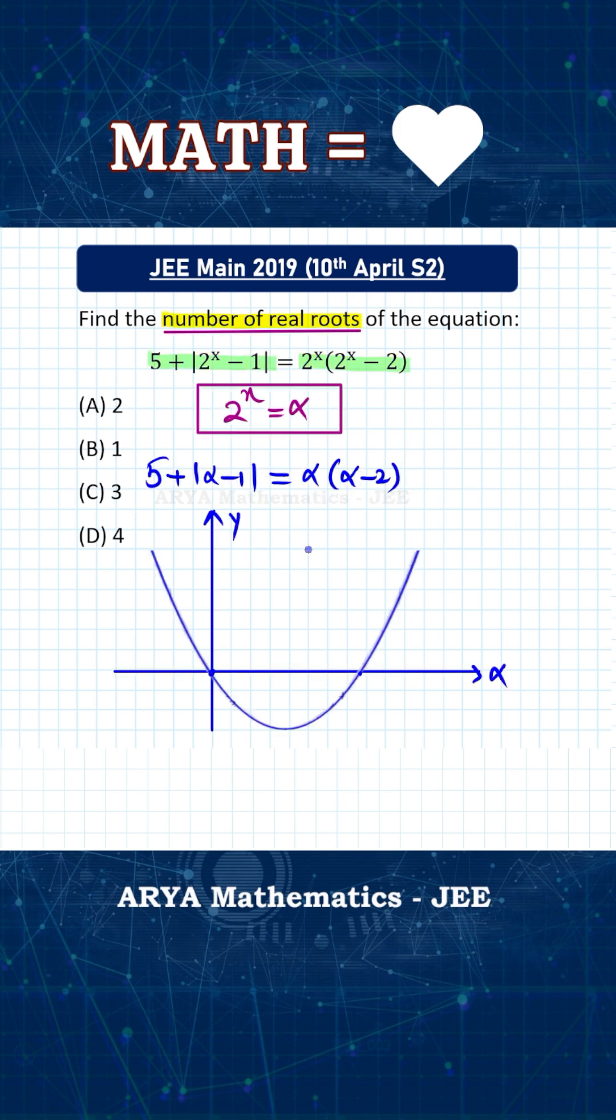So here if you plot the graph of this function on right hand side alpha into alpha minus 2. And let us say this is your alpha axis and this one is y axis. So if you plot the graph of this function, then basically you will get an upward parabola because coefficient of alpha square is positive. And it will be passing through this point is 0, 0. And this term will become 0 when alpha is 2. So another point will be 2, 0. So this is the graph of function on right hand side.